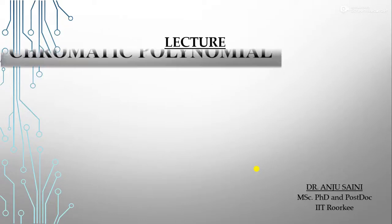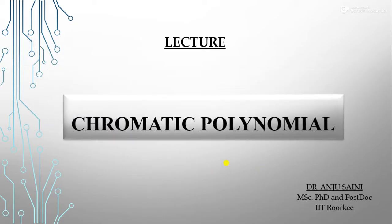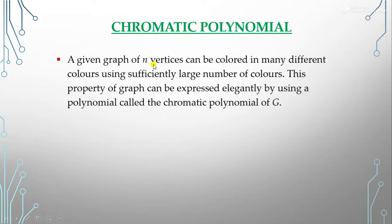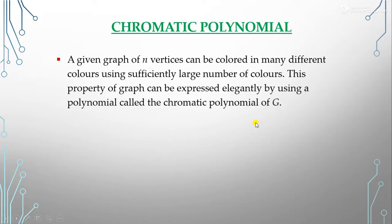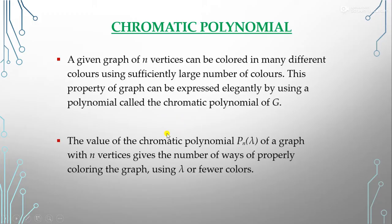Today we start the next topic of graph coloring after the chromatic number, that is the chromatic polynomial. A given graph with n vertices can be colored in many different colors using a sufficiently large number of colors. This property of a graph can be expressed elegantly by using a polynomial called the chromatic polynomial of G. We can calculate the chromatic number of any graph, and also find how many ways we can achieve proper coloring using the chromatic polynomial.